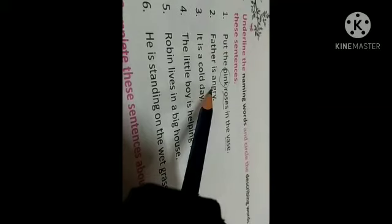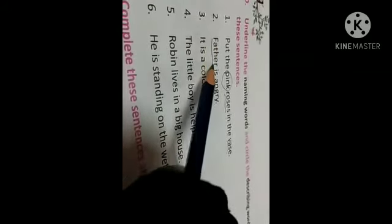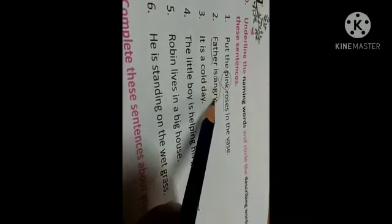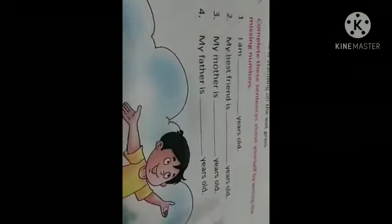Let's do one more. Father is angry. Now, which is the naming word here? Father. We will underline father. And, angry is describing word. We will circle it. In this way, you have to do the remaining exercise.